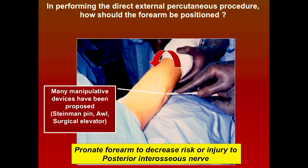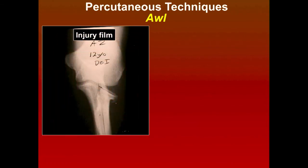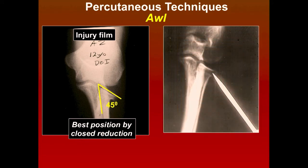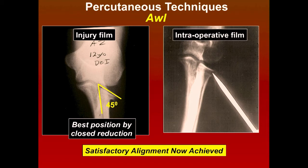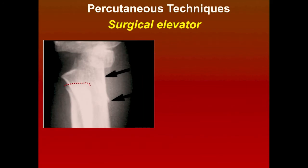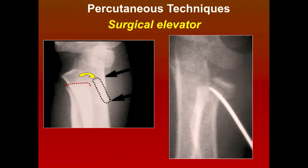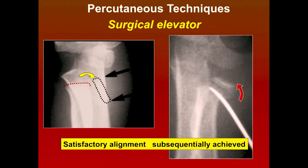Various devices can be used for percutaneous reduction: a Steinmann pin, an awl, or a surgical elevator. Here's one where the best manipulation couldn't achieve reduction, so we used an awl and pushed on the head under image intensifier guidance. Another approach uses a surgical elevator through a small incision with a freer elevator to push it up — satisfactory alignment was achieved.